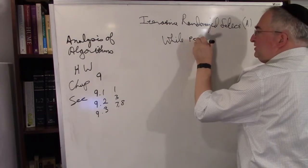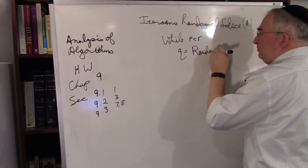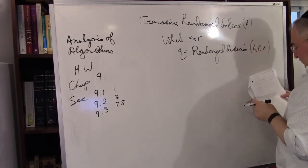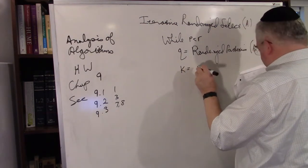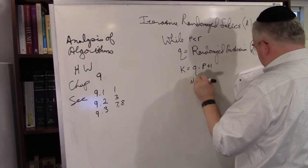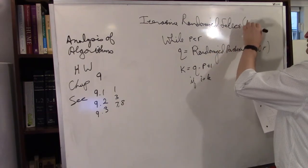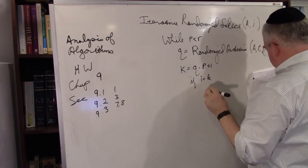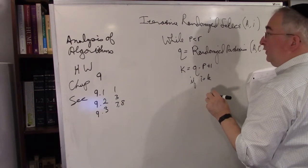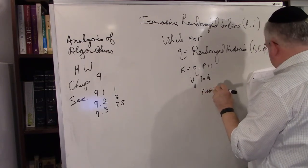You're going to give it the array a. While p is less than r, then q equals randomized partition of a, p, r. k is equal to — following mostly the book — q minus p plus one. If i equals k, in other words you're searching for the ith element, if i is equal to k that means you've got it. Then return a of q, and you get the thing you want.